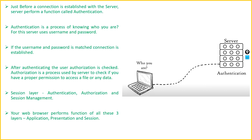Before the connection is established, the server performs a function called authentication. Authentication is the process of verifying who you are — the server authenticates using credentials like username and password. After authentication, authorization is checked. Authorization is the process used by the server to verify if you have proper permission to access a file or any data. So the session layer performs three jobs: authentication, authorization, and session management.